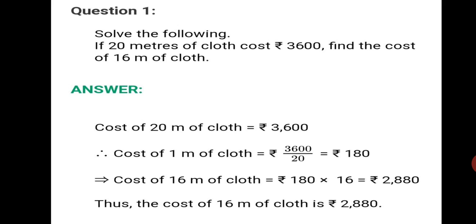The cost of 20 meters of cloth is Rs. 3600. Therefore, if we want to find the cost of 1 meter of cloth, we will have to divide. Remember: first divide and then multiply. So, 3600 divided by 20. You can solve in rough and find the answer. You get the cost of 1 meter of cloth as Rs. 180.